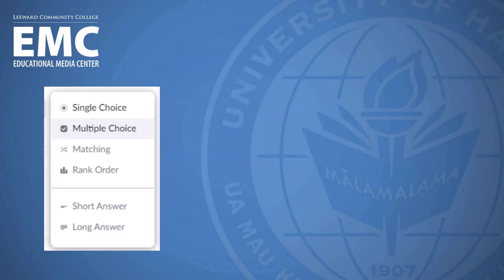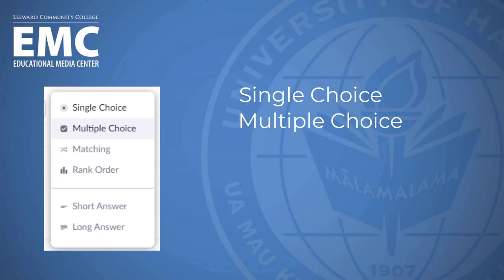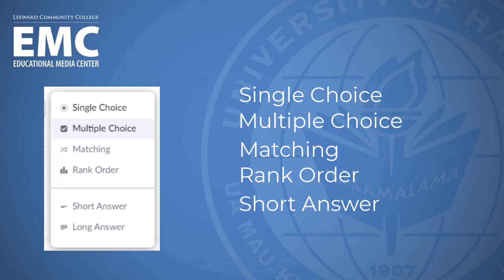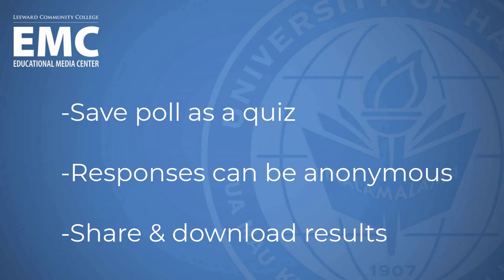There are a few different types of interactions that you can include in your poll. They are single choice, multiple choice, matching, rank order, short answer, and long answer. You may also convert your poll into a quiz or select to make the responses anonymous.